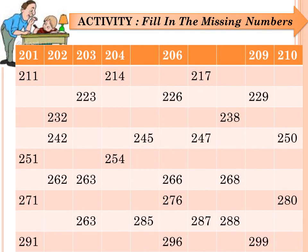The first number there is 201, followed by 202, 203, 204. Then we have a gap in between, up to the last point where you have to fill in the missing number. Trust you can do this. I will give you some minutes to do that.